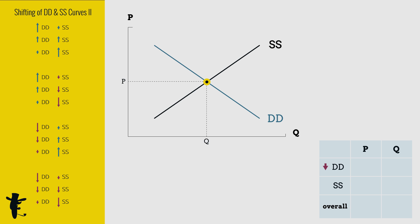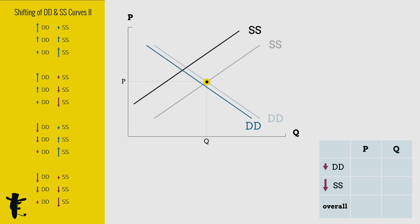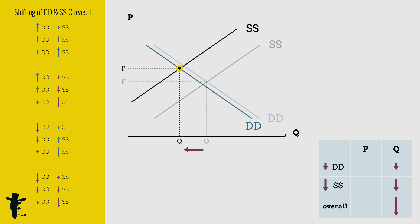When the decrease in demand is small and the decrease in supply is huge, quantity decreases and price increases.